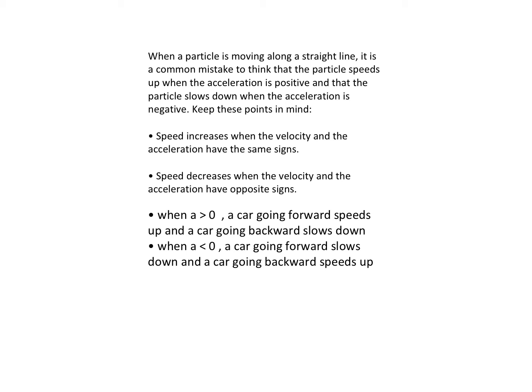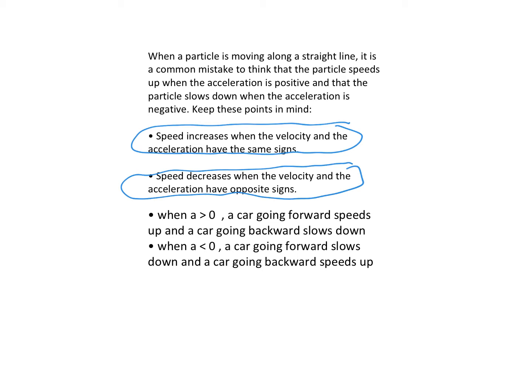A common mistake is thinking that a particle is speeding up when the acceleration is positive and slowing down when it's negative. But keep in mind that speed increases when velocity and acceleration have the same sign, and speed decreases when velocity and acceleration have opposite signs. For example, speed increases when a car going forward speeds up or a car going backward slows down. Always keep that in mind — same signs means speeding up, opposite signs means slowing down.